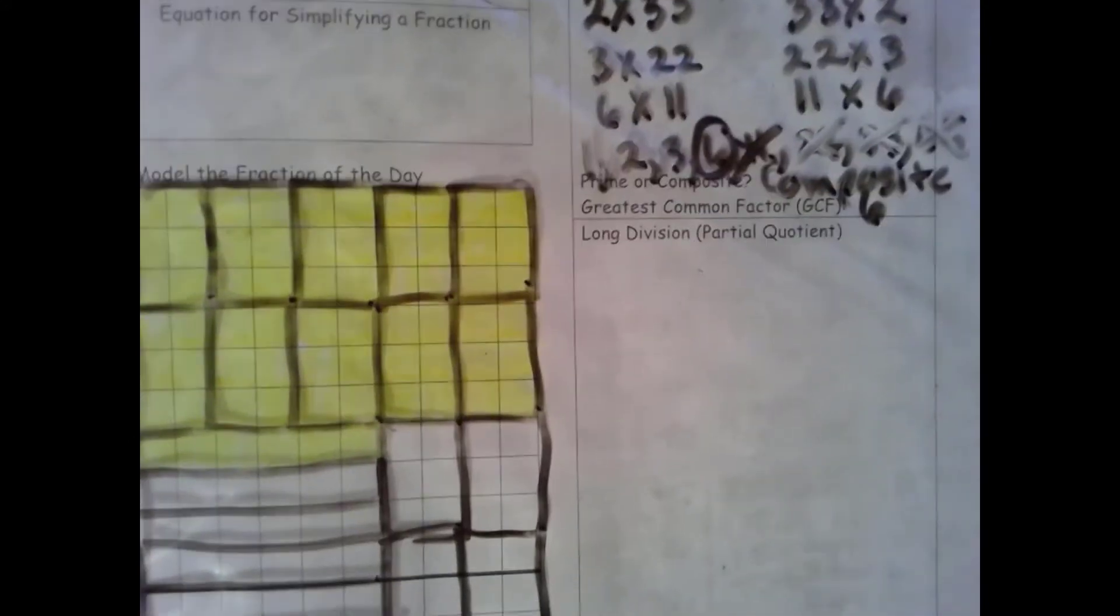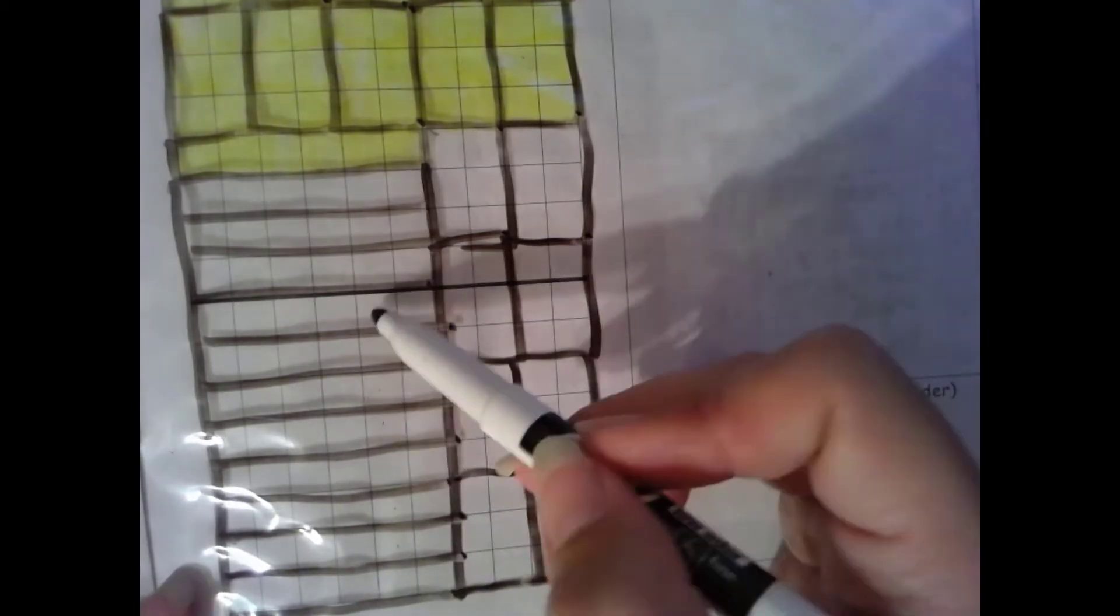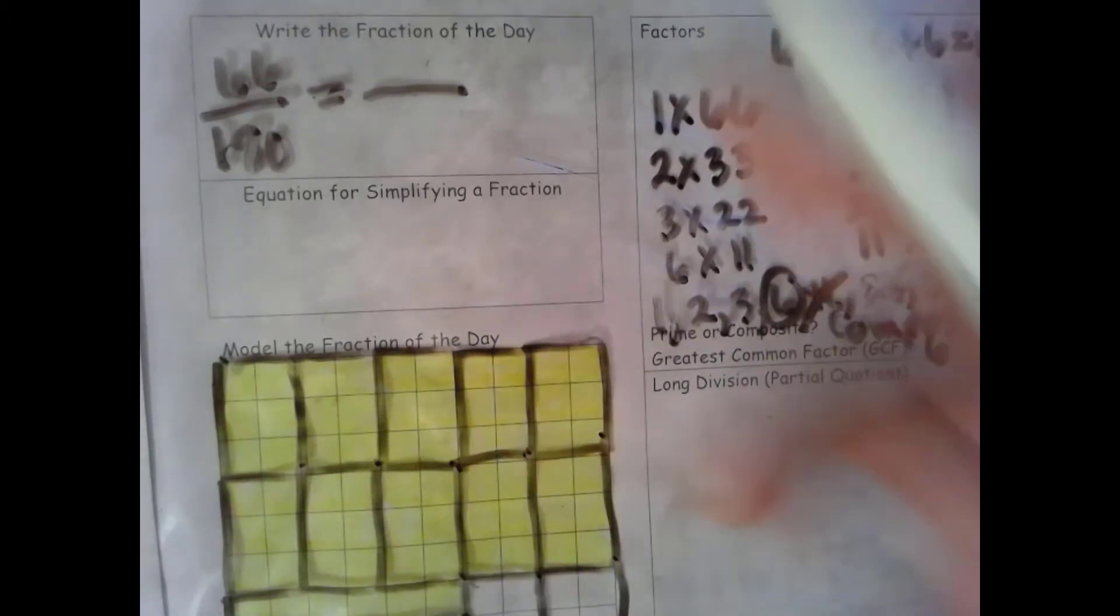So let's count up our total groups of 6. So we have 1, 2, 3, 4, 5, 6, 7, 8, 9, 10, 11, 12, 13, 14, 15, 16, 17, 18, 19, 20, 21, 22, 23, 24, 25, 26, 27, 28, 29, 30.